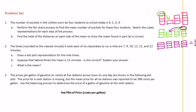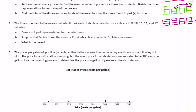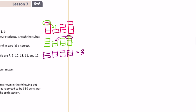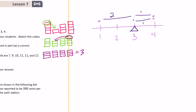Part B: find the total of the distances on each side of the mean to show the mean found in part A is correct. On a dot plot with values one, two, three, four — we have two fours, a three, and a one. The mean is three. The distance from one to three is two, and the distance from each four to three is one, so together the right side distance is two. The left side distance is also two, confirming the mean is three.